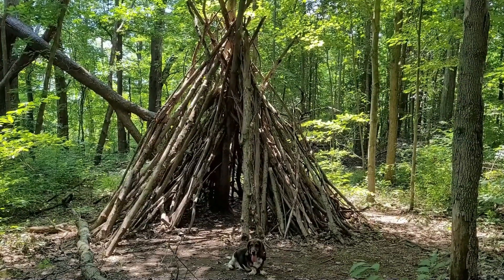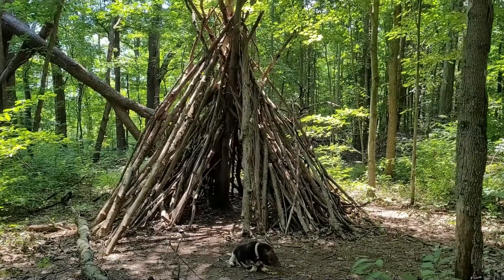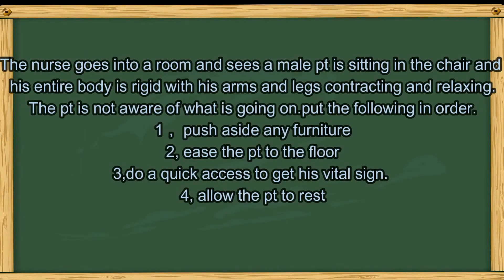I have another question for you. The nurse goes into a room and sees a male patient sitting in a chair. His entire body is rigid, with his arms and legs contracting and relaxing. The patient is not aware of what is going on. I need you to put the following in order. 1. Push aside any furniture. 2. Ease the patient to the floor. 3. Do a quick assessment to get his vital signs. 4. Allow the patient to rest.